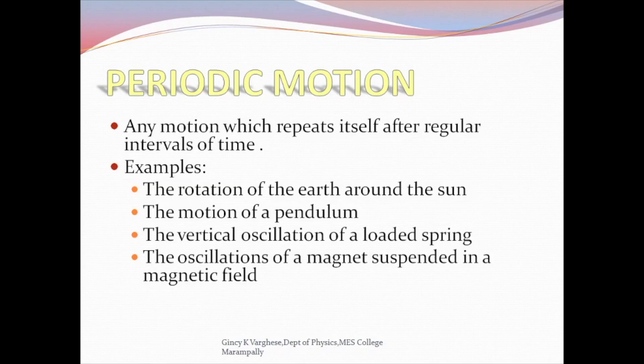First we can define what is periodic motion. Any motion which repeats itself after a regular interval of time is called periodic motion. Examples include rotation of the earth around the sun, motion of a pendulum, vertical oscillation of a loaded string, and oscillation of a magnet suspended in a magnetic field.